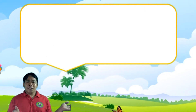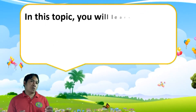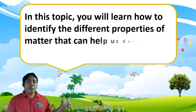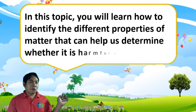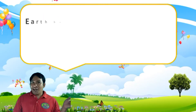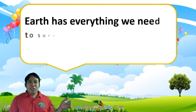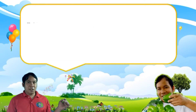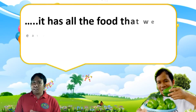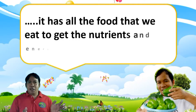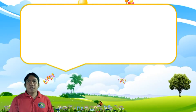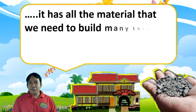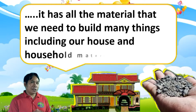In this topic, you will learn how to identify the different properties of matter that can help us determine whether it is harmful or useful. Earth has everything we need to survive. There are also things that can harm us. It has all the food that we eat to give nutrients and energy in order to live. It has all the materials that we need to build many things, including our house and household materials.